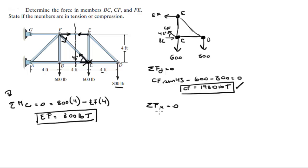And now last but not least, the sum of the forces in the X are going to help us determine BC. And you know that minus EF minus CF cosine of 45 plus BC is equal to zero.